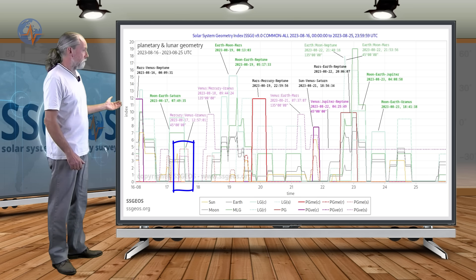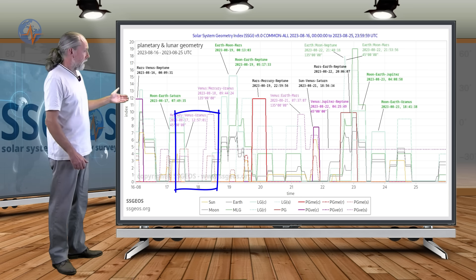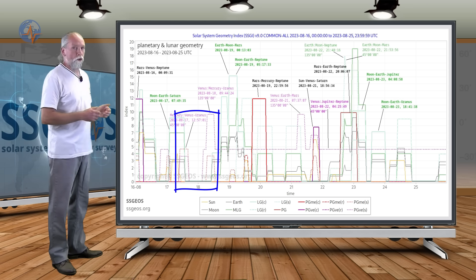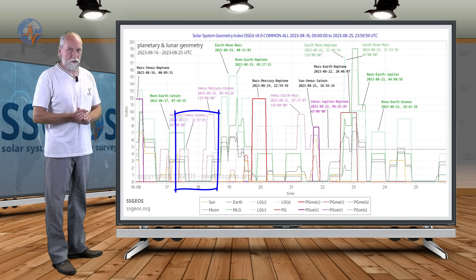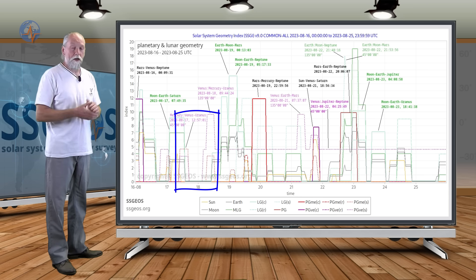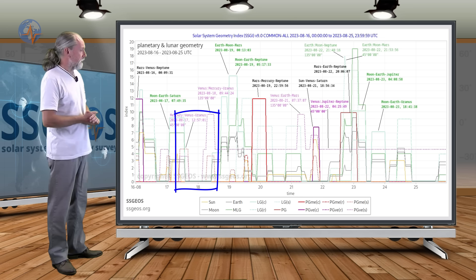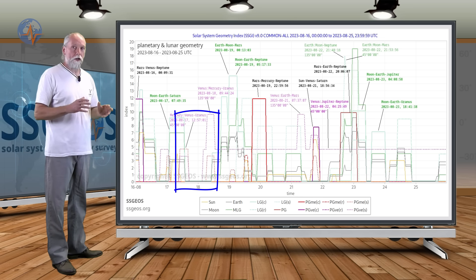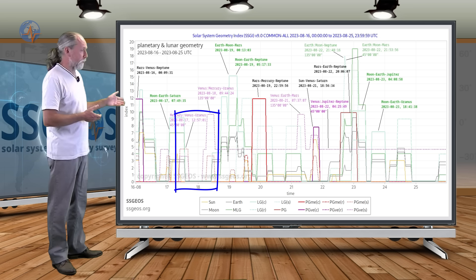And so we have Mercury-Venus-Uranus today, and then Venus-Mercury-Uranus tomorrow. This is not the critical right angle geometry that we have seen earlier this year that was followed by magnitude 7.5, 7.7 earthquakes. This is 45 and 135 degrees, a bit less critical. But still I expect a seismic increase following this planetary geometry.